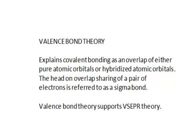The valence bond theory explains covalent bonding as an overlap of either pure atomic orbitals or hybridized atomic orbitals between individual atoms sharing a pair of electrons involved in a covalent bond. The head-on overlap sharing of these pair of electrons is referred to as a sigma bond. Further, the valence bond theory supports the VSEPR theory that we've looked at previously.